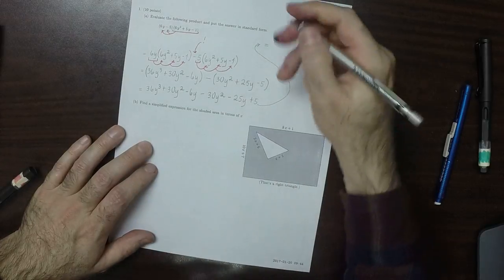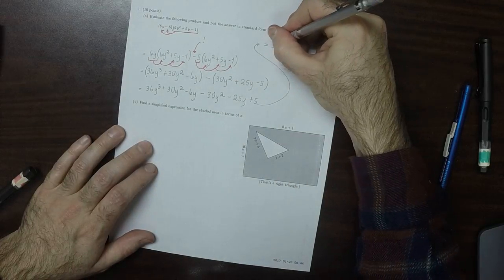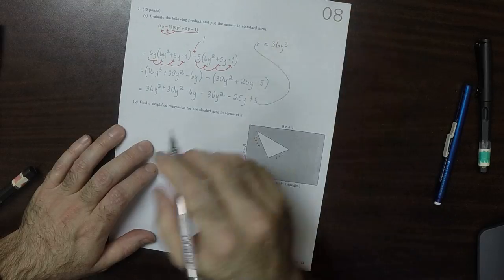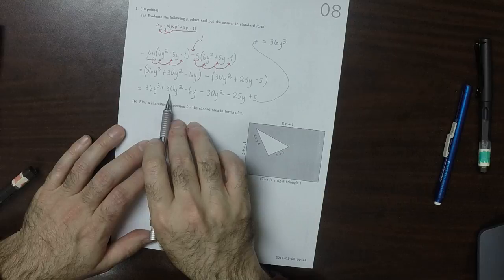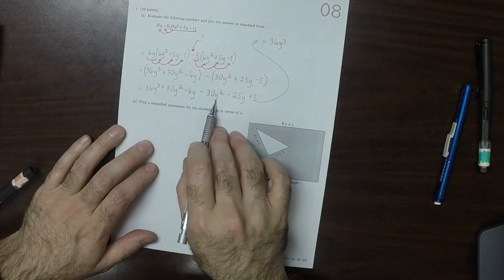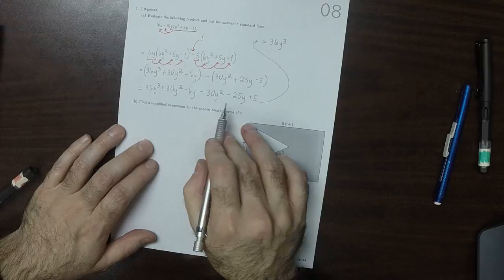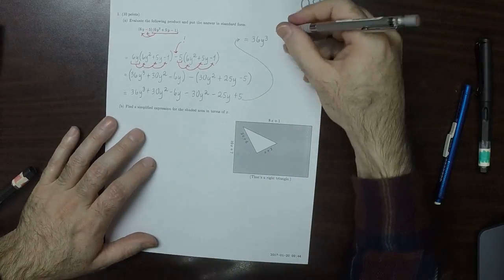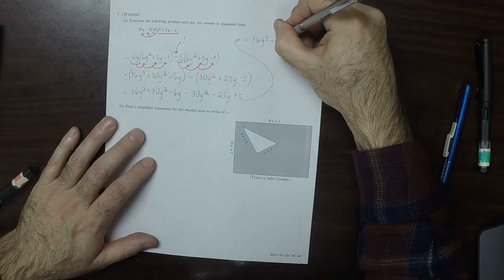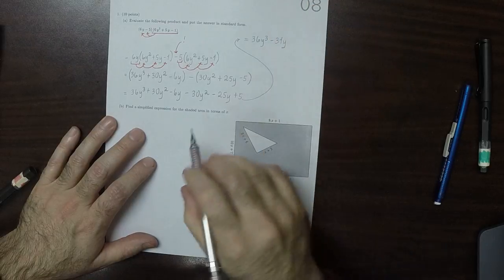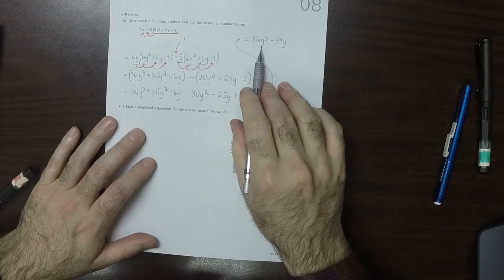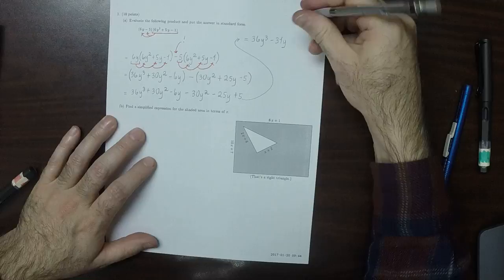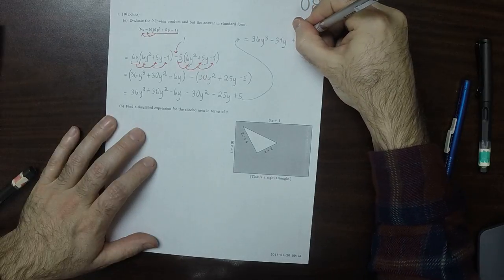So carrying this out, 36y cubed. By carry out, I mean I'm collecting. So 36y cubed. Now for the squares, we have 30y squared and then minus 30y squared, so there's no y squareds. Minus 6y minus 25y, so that's minus 31y. So we dealt with the y to 3, we dealt with the y to 2, there were none, we dealt with the y to 1, and so there's only constants now. Plus 5.